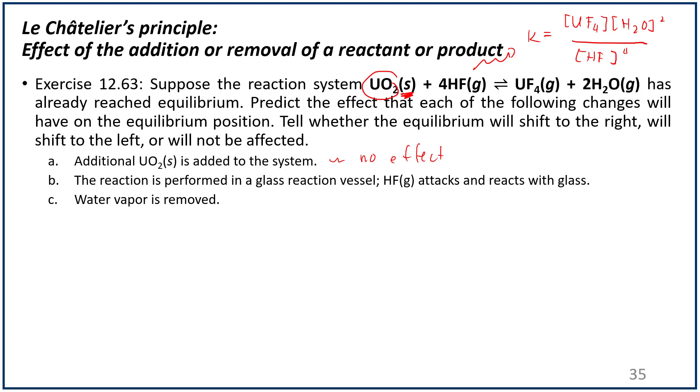The reaction is performed in a glass vessel. HF attacks and reacts with glass. This just means that now you have a lower concentration of hydrofluoric acid. If this hydrofluoric acid on the reactant side is lowered, then in order to replenish it, the equilibrium must shift to the left to reform hydrofluoric acid or hydrogen fluoride gas.